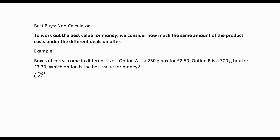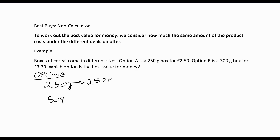In this example, option A has 250 grams of cereal for £2.50. To work out how much 100 grams costs, we have 250 grams costing 250 pence — I'll put it into pence to make it a little bit easier. If we divide both sides by 5, we get 50 grams costing 50p, which means 100 grams would cost 100 pence.